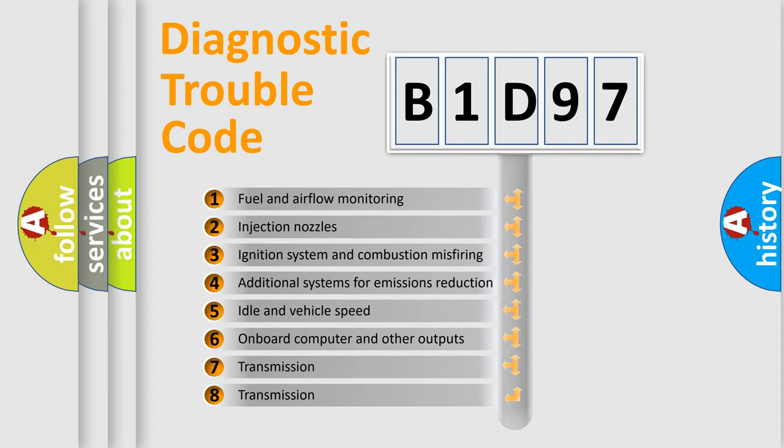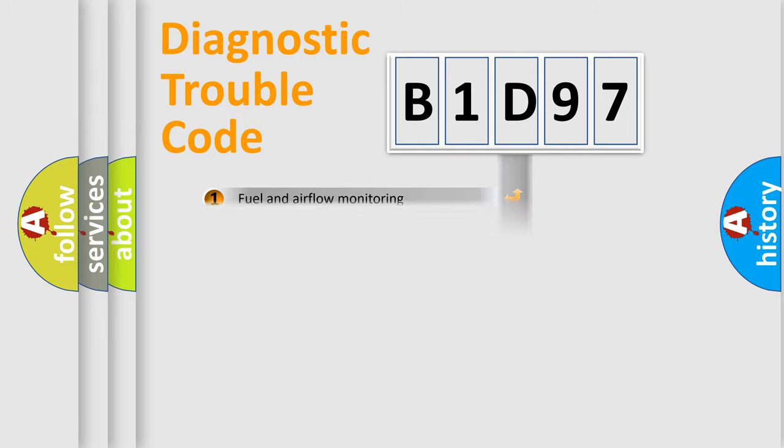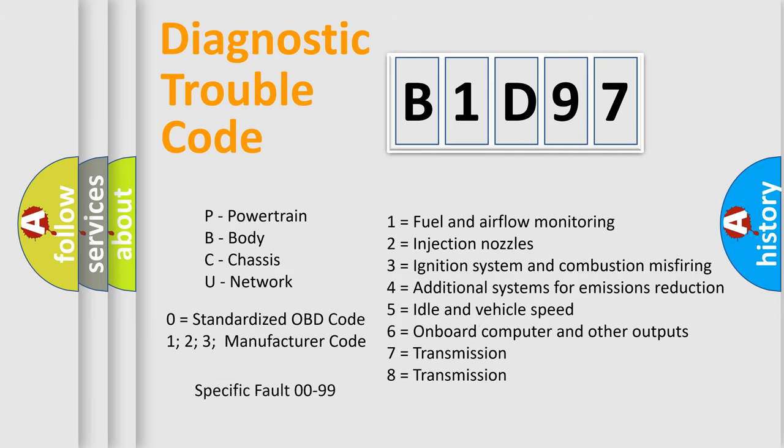The distribution shown is valid only for the standardized DTC code. Only the last two characters define the specific fault of the group. Let's not forget that such a division is valid only if the second character code is expressed by the number zero.